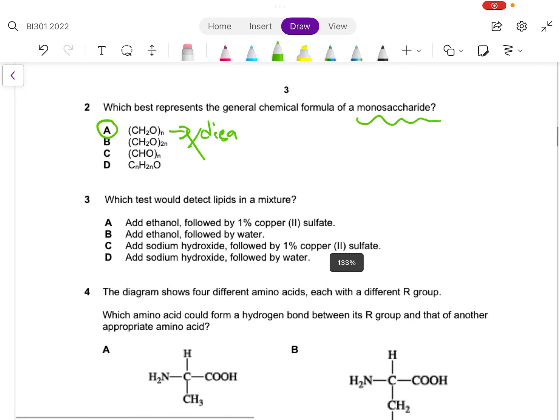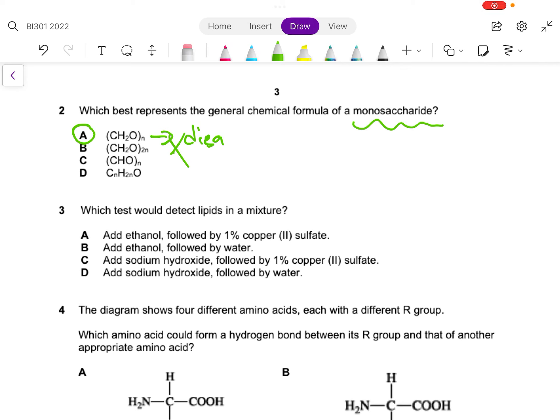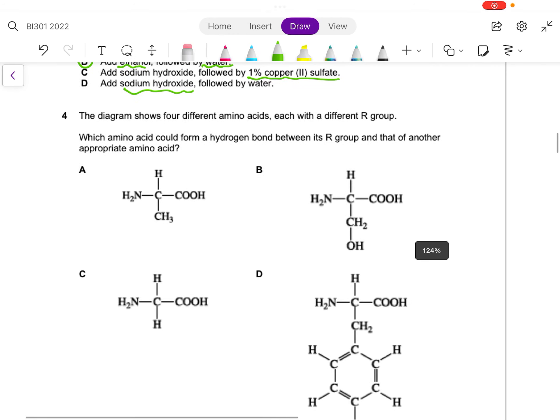Number three: which test would detect lipids in a mixture? If you look across the board, B is the best answer because all you need is ethanol followed by water. You do not need one percent copper sulfate - that's for testing proteins. Sodium hydroxide is also not required to test for lipids, that's required for the biuret test to test for proteins.